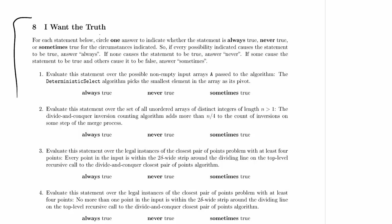The problem is titled 'I want the truth,' and we've got an overall statement: for each statement below, we want to circle one answer to indicate whether the statement is always true, never true, or sometimes true. If every possibility causes the statement to be true, we answer always. If none causes it to be true, we answer never. And if some cause it to be true and others cause it to be false, we answer sometimes.